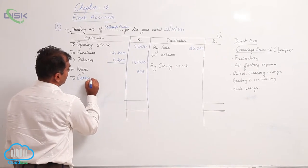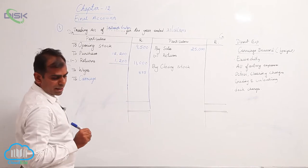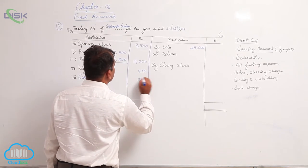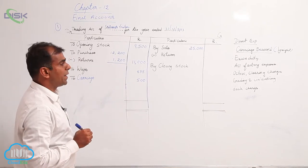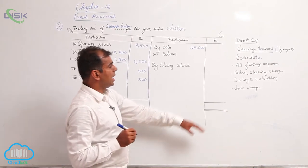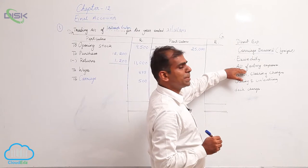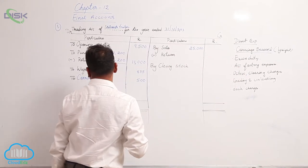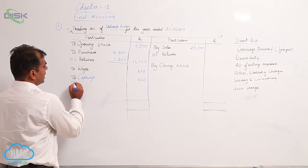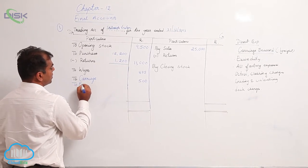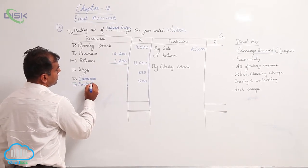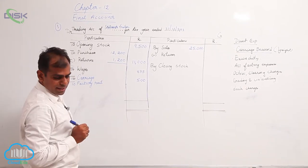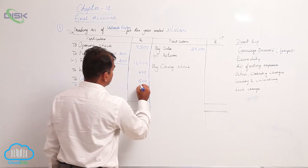Now next we have factory rent. So here I have mentioned under direct expenses all factory expenses. So factory rent will be taking in trading account debit side. So to factory rent, the amount being 925.